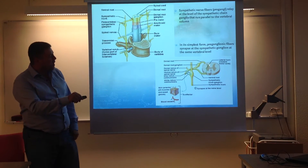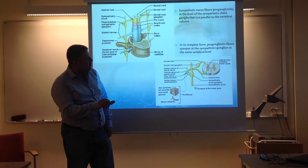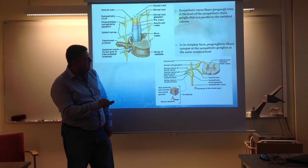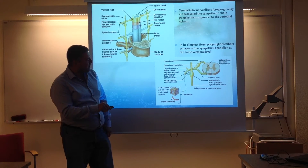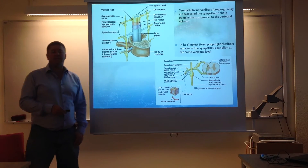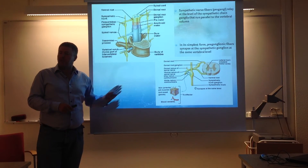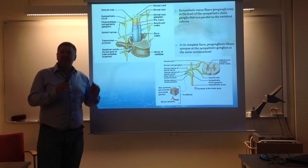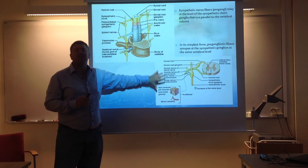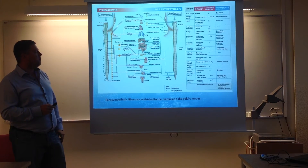In this case, you have the preganglionic fiber coming out, having the first synapse, and the postganglionic neuron leaving from the spinal nerve to whichever effector organ is there. This is a simplified picture — it could be made much more complicated, but if you understand this basic organizational structure, that should be more than enough.